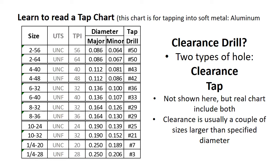The drill sizes shown in that chart are for aluminum. If you're drilling into steel you want a slightly larger hole because it's harder to cut those threads without breaking your tap. A little bit more on that shortly.